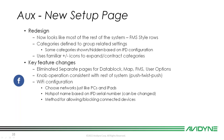Some categories are shown or hidden based on IFD configuration — if you've got a wireless setup or not, for instance — to keep things decluttered. It uses familiar plus and minus icons for expanding and contracting each category. Key feature changes: we eliminated the separate pages for data block, map, FMS, and user options. That's all gone — it's all on one page.